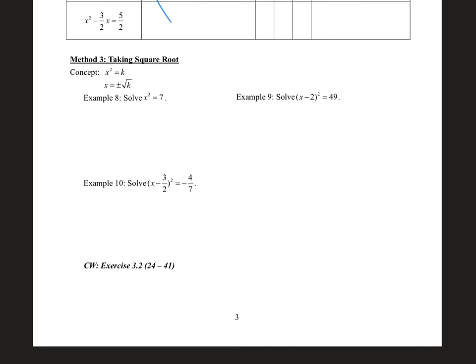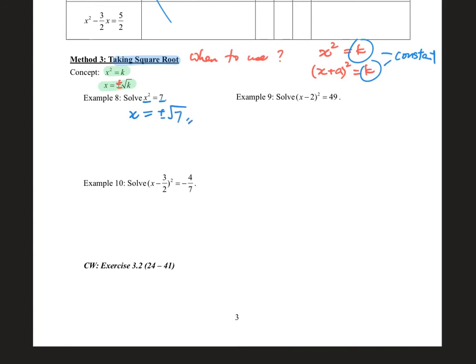Lastly, we come to method 3: taking square roots. This addresses a special case. When shall we use it? It is in the situation when you have a square on one side equal to a constant k — for example, x² equals k, or (x plus a)² equals k. So whenever you have a square on one side and a constant on the other side, you can apply the method of taking square roots. The concept: when x² equals k, you take the square root to get x directly, but you must include plus or minus.